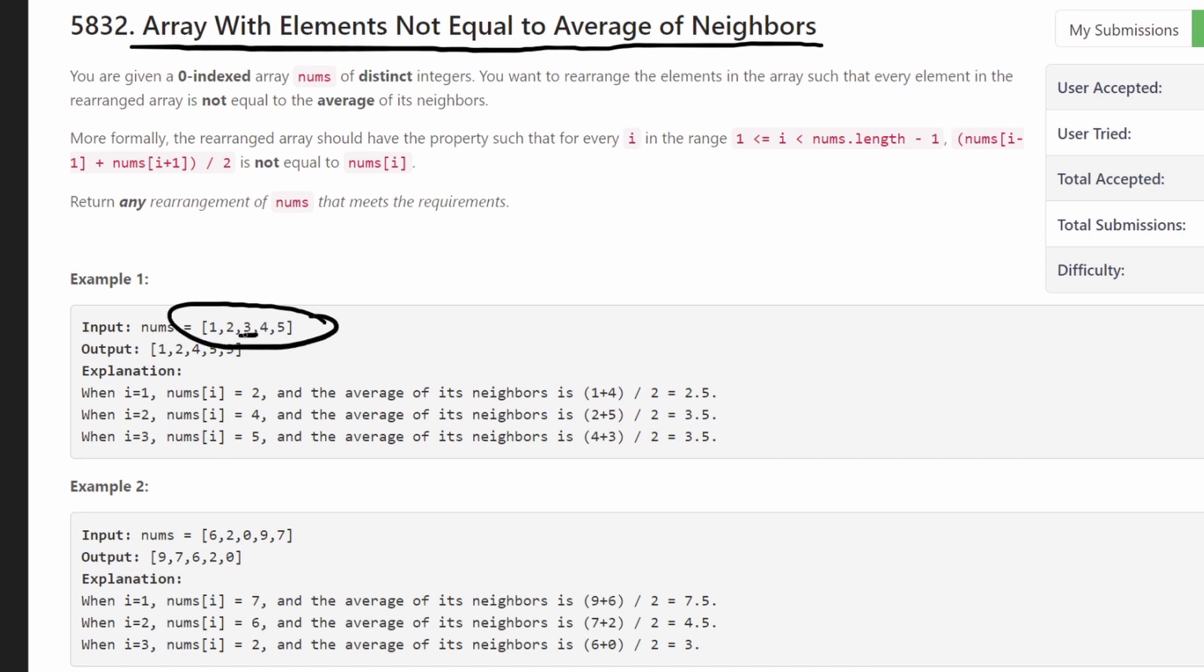if you look at 3 and you take a look at its neighbors 2 and 4, when you add those neighbors together, take the average 2 plus 4 divided by 2 gives us 3, which is not what we want. We don't want the neighbors of 3 to be equal to 3. So how can we rearrange this so that that's never going to be the case?